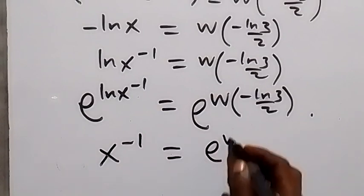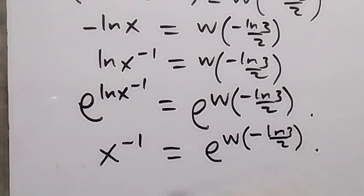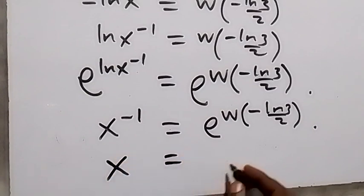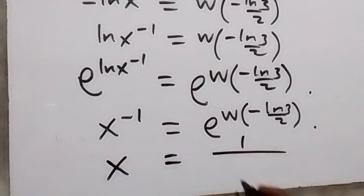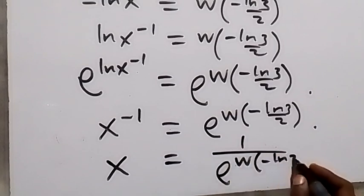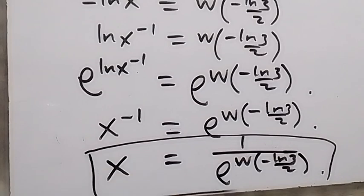Taking the reciprocal of both sides, x equals 1 over e raised to the power of W(minus ln(3)/2). That is our solution. Thank you for watching — don't forget to subscribe to my channel and turn the notification bell on so as not to miss out. See you in the next class, bye for now.